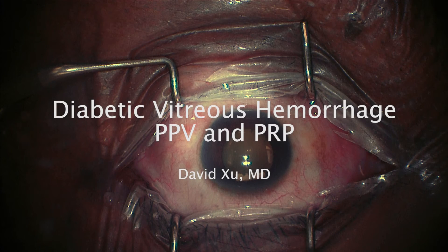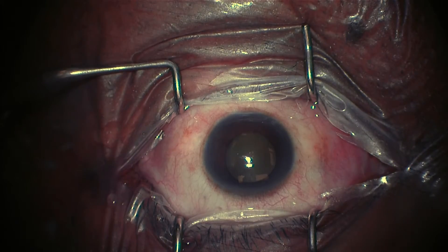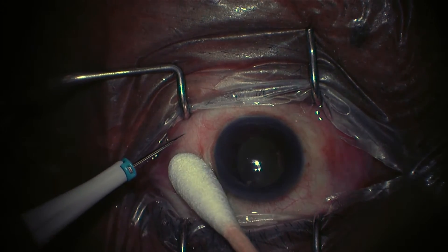Hi everyone, this is David Chu, and we're going to talk about a diabetic vitreous hemorrhage treatment using pars plana vitrectomy and panretinal photocoagulation. We're going to take this from the top, the same as before.